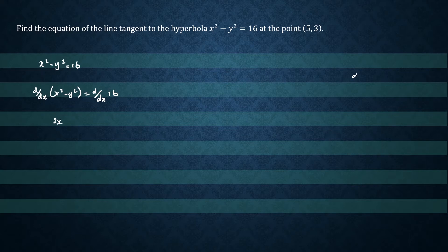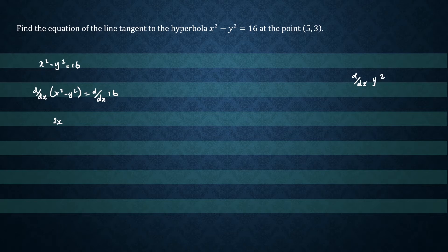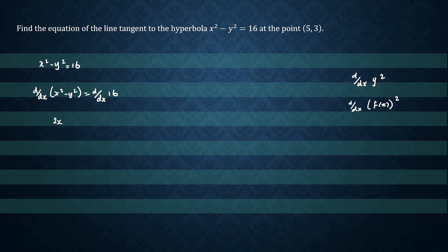The next step is to differentiate y squared. To do that, we'll use implicit differentiation. Note that d/dx of y squared... y is actually a function of x. So if you like, you could write it like this. And we use the chain rule to differentiate this.